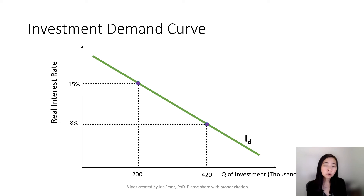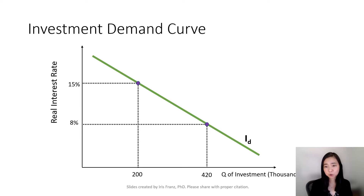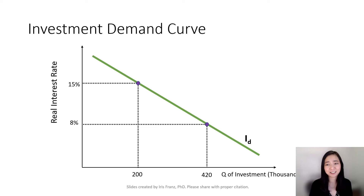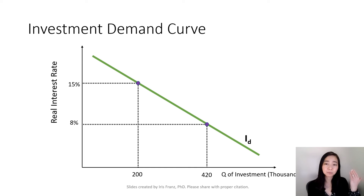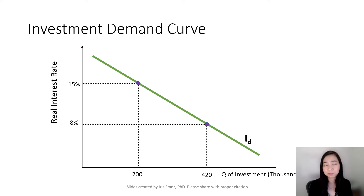You are going to see the real interest rate as a price tag of investment. Typically, if you're a firm owner or entrepreneur and you want to invest in factory equipment or warehouses, you don't have the money to invest just like that — you will have to borrow from the bank. That means you will have to return the principal plus real interest. So if the real interest becomes higher, that will hinder you from investing in factory equipment, because you find it unaffordable to borrow from the bank.